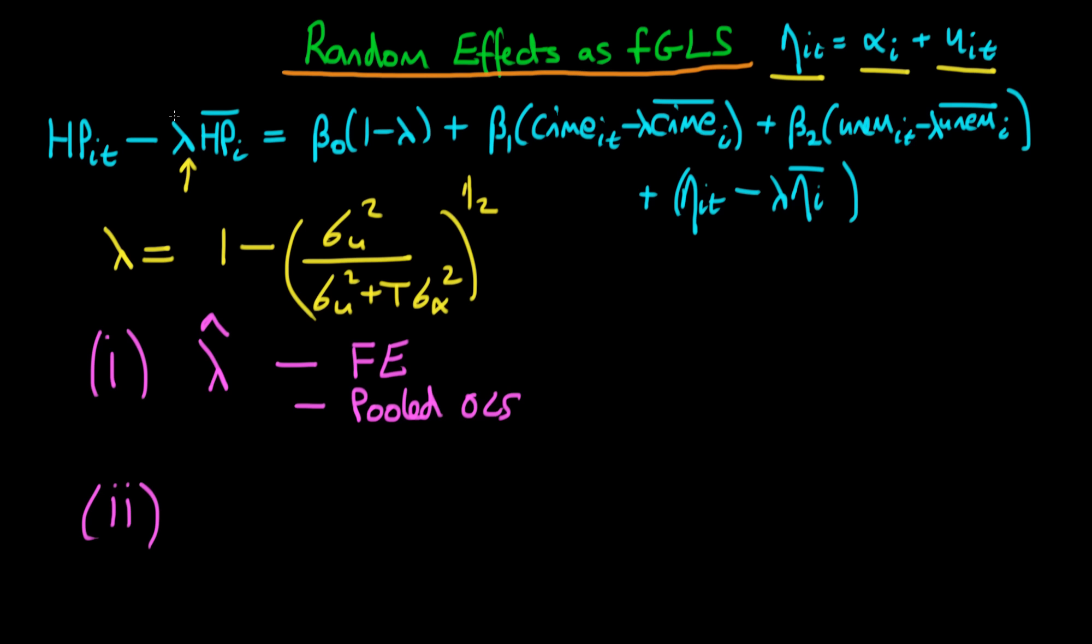The second stage is then to use this estimate of lambda, lambda hat, to transform the system. So essentially here in the equation above, all we do is replace every lambda in the expression by lambda hat, and then all we do is we just use ordinary least squares or pooled ordinary least squares on the transformed system.